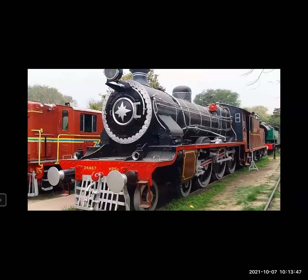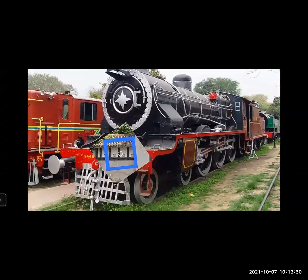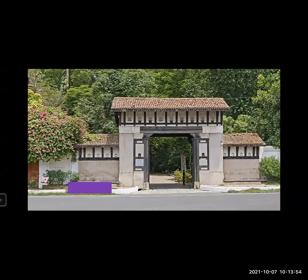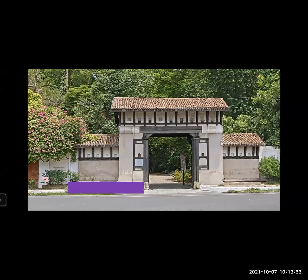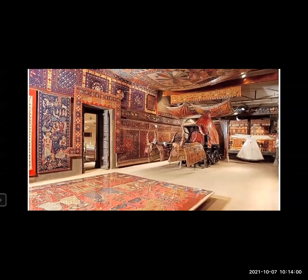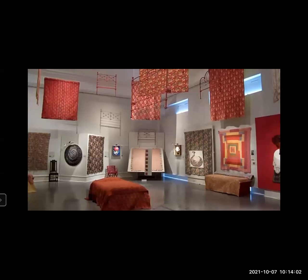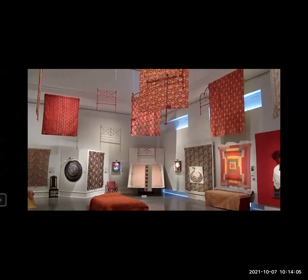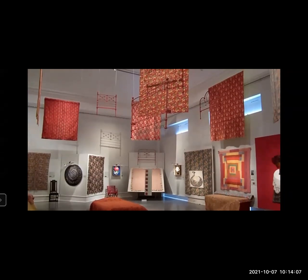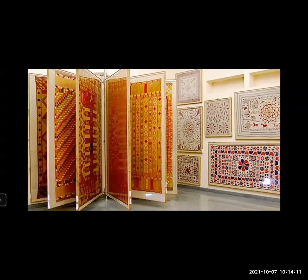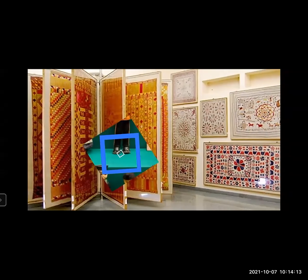Number seven: Calico Museum of Textiles, Ahmedabad. Fabrics and textiles have formed an important part of Indian trade and heritage. The Calico Museum showcases the splendor of Indian looms and textiles. It displays ancient textiles and clothes made during the Mughal era and chronicles the progress of the textile industry across the country. Don't miss the display of fine Kashmiri pashminas, rugs, and ikat handlooms.